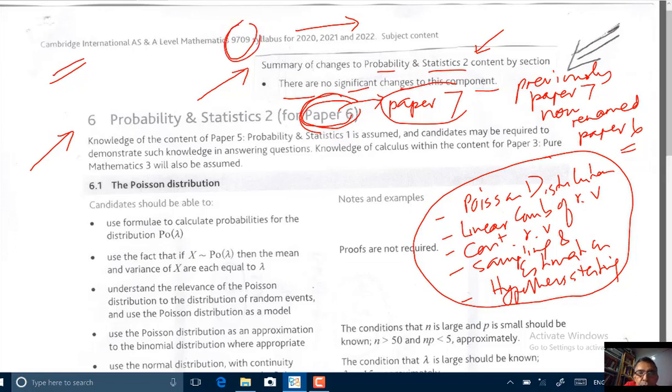Probability and Statistics 2, the paper is called Paper 6. And previously, it was called Paper 7. The whole content from the previous Paper 7 has now been moved to Paper 6. Topics - no changes in the topics. They're all the same.